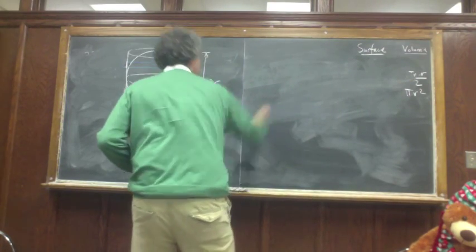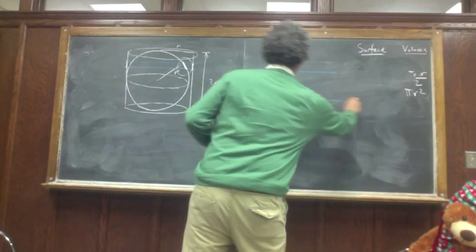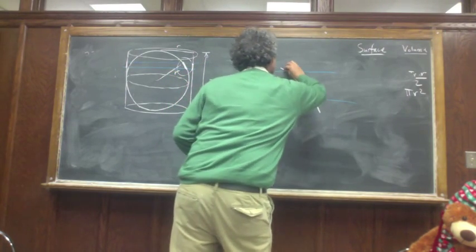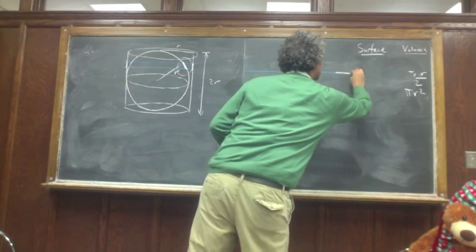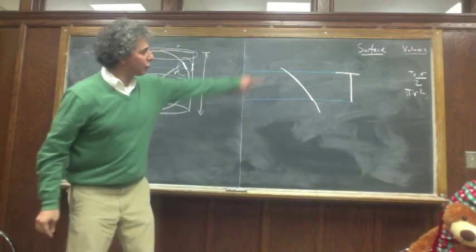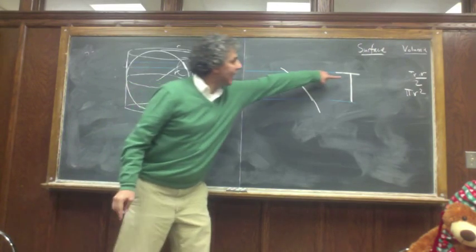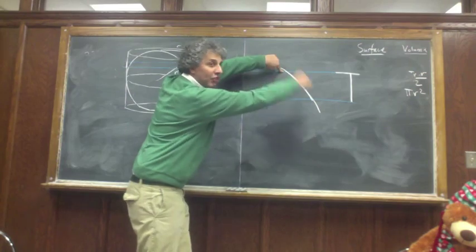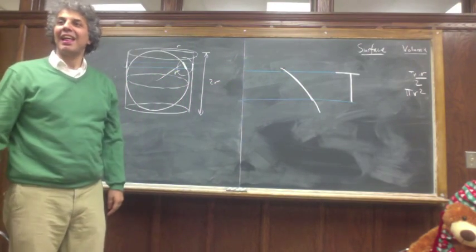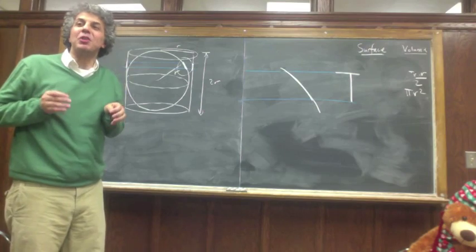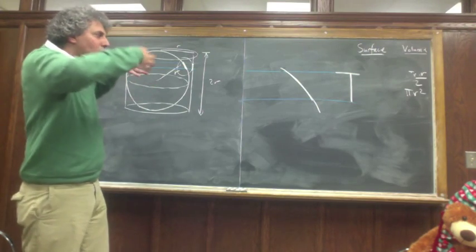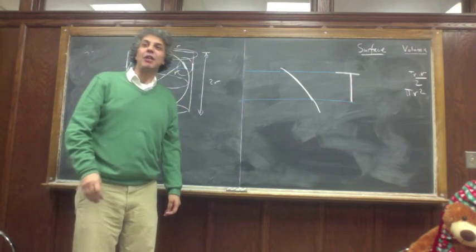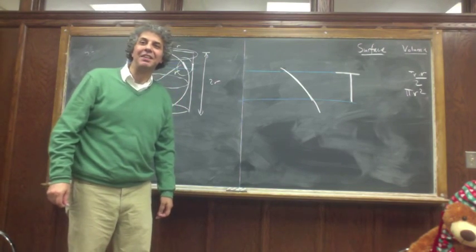Here is my slice, here is my sphere. This has an angle. This is the cylinder. I want you to notice that the slice for the sphere, because it cuts with an angle, it's bigger. And if you put both of them together, the fact that it's smaller in size — in radius — but it's slanted, turns out they are identical to each other.